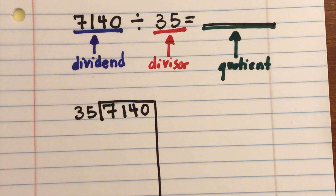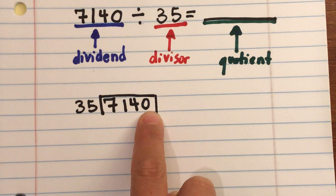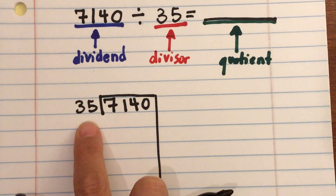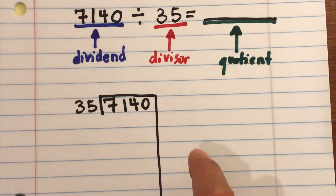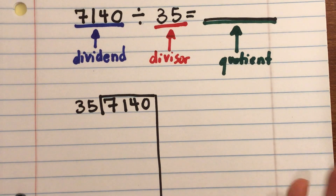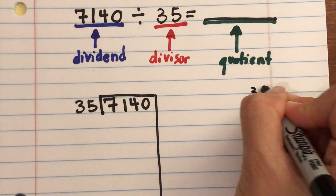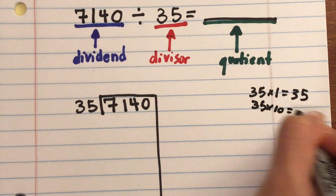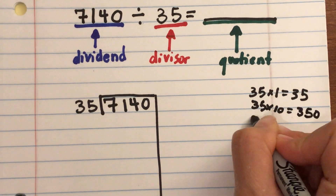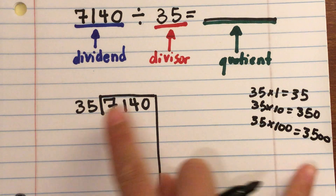Set up 7,140 ÷ 35 with the dividend inside and draw your tail line. Can 35 go into 7,140? Of course — let's find easy ways using multiples of 10. 35 × 1 = 35, 35 × 10 = 350, 35 × 100 = 3,500. I know 3,500 fits, so 35 can definitely go into 7,140 at least 100 times.